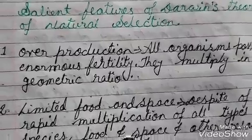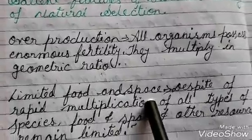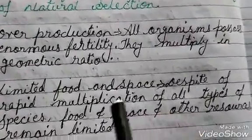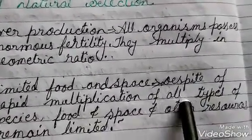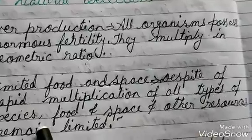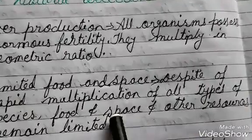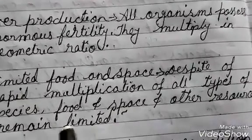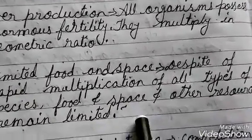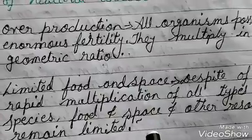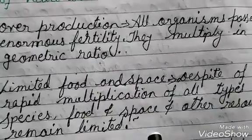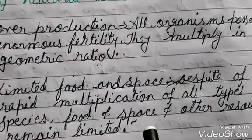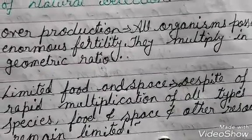Next is limited food and space. Despite the rapid multiplication of all types of species, food, space, and other resources remain limited. It means they are not liable to increase according to the production of the species.